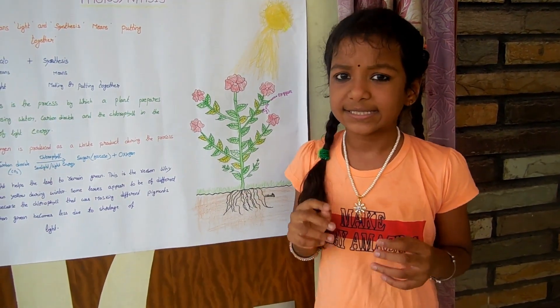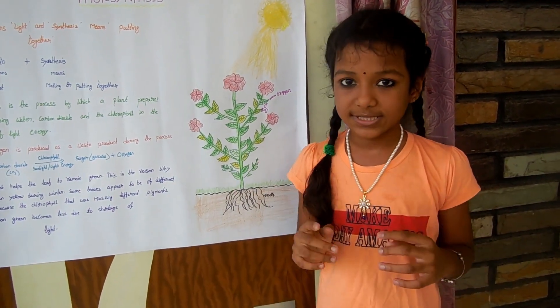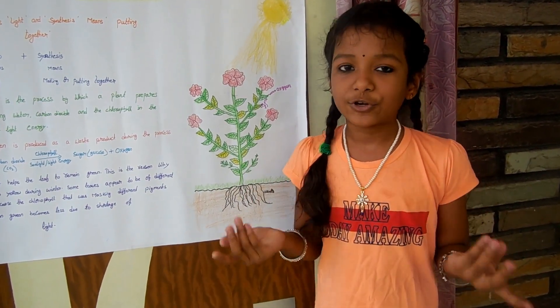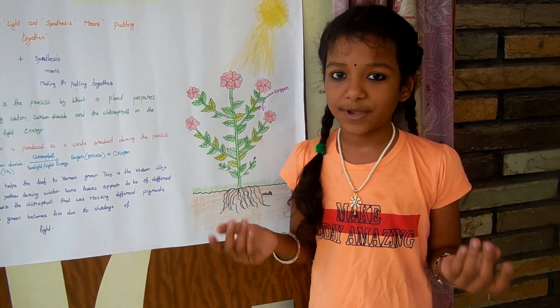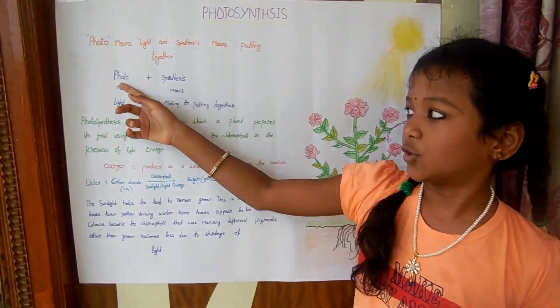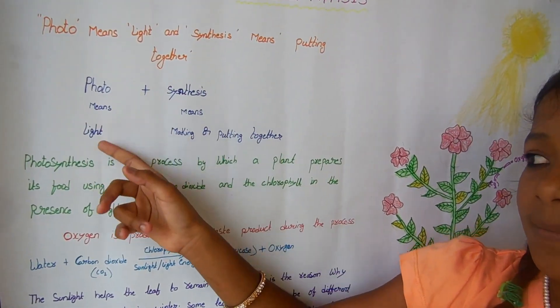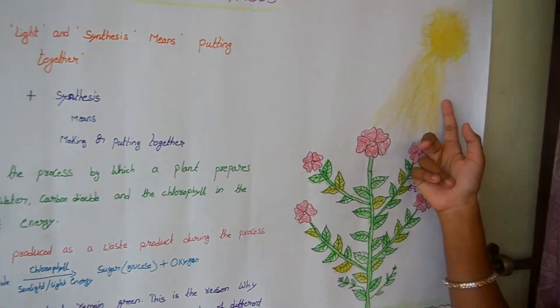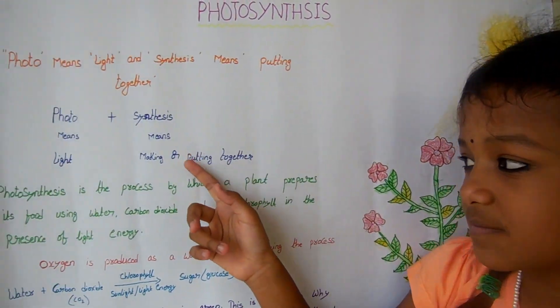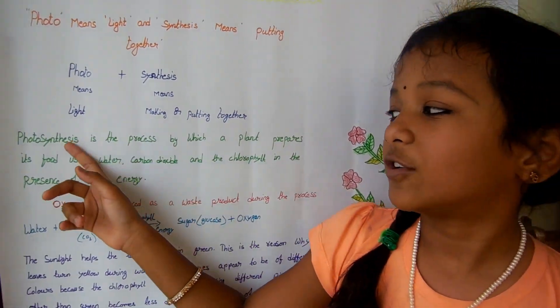Only green plants carry out photosynthesis. Photosynthesis is made up of two words: photo plus synthesis. Photo means light and synthesis means making or putting together.